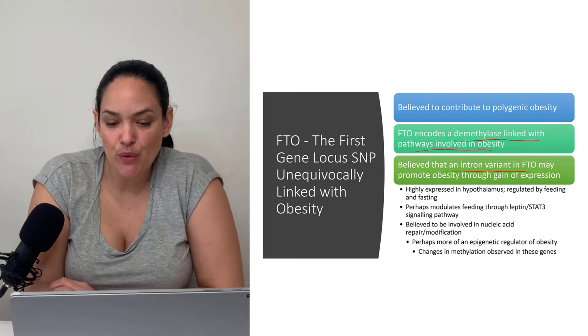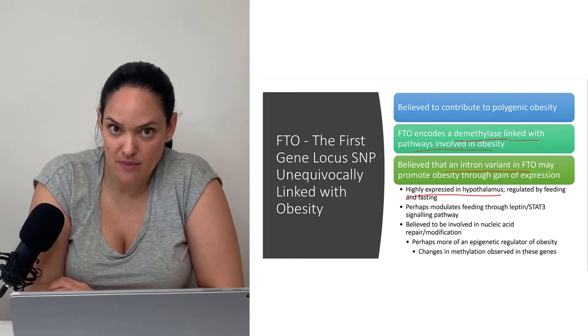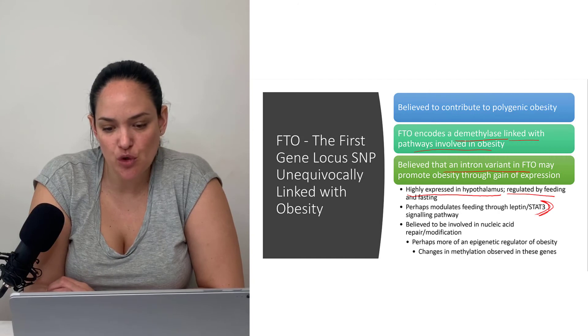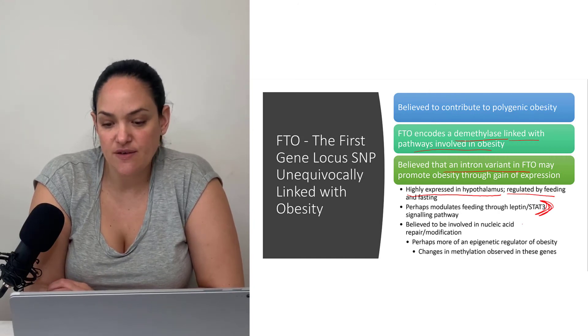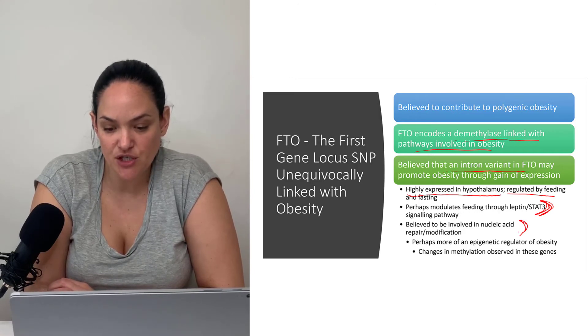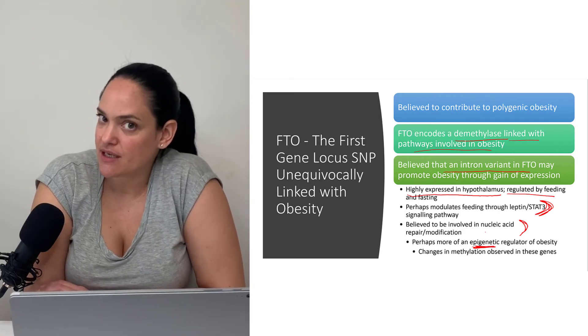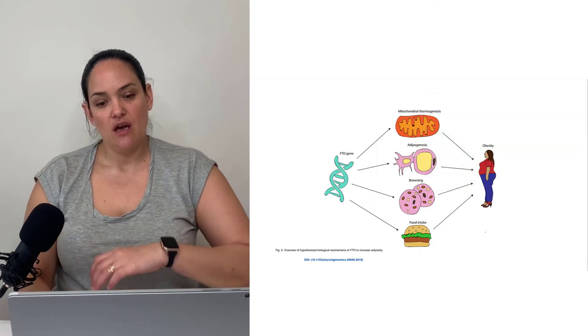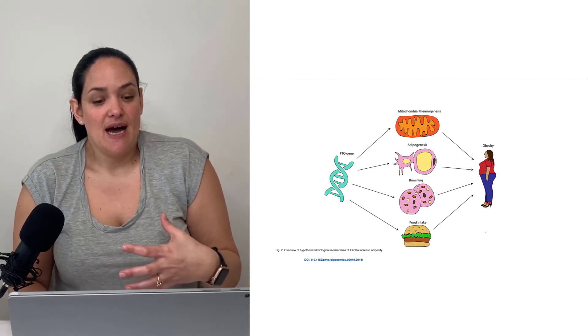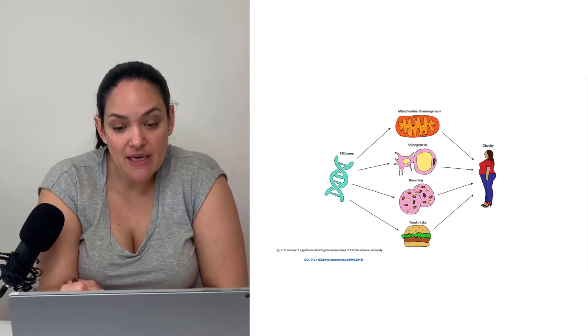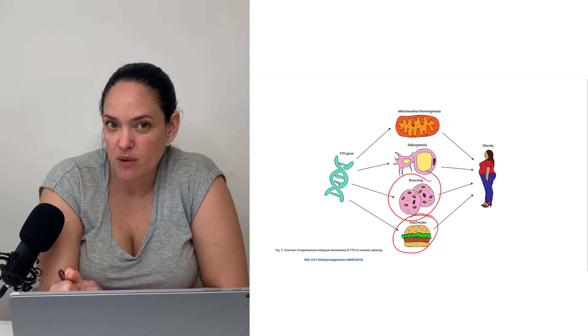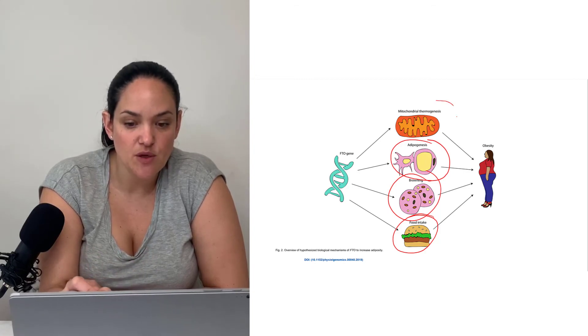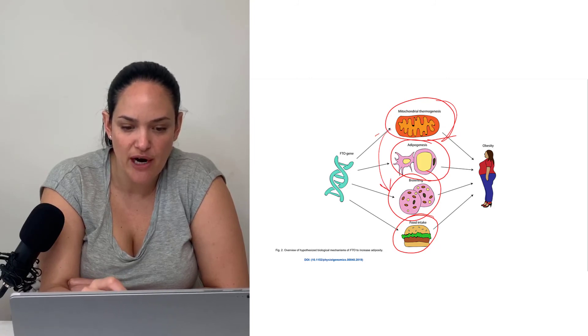This FTO is highly expressed in the hypothalamus, which we're going to spend a lot of time on when we talk about appetite. We believe it has something to do with feeding, perhaps some sort of modulation of the leptin-STAT3 pathway and/or nucleic acid repair and modification. It might actually be more linked to epigenetic origins of obesity as opposed to monogenic or polygenic causes.